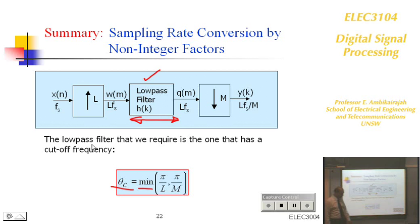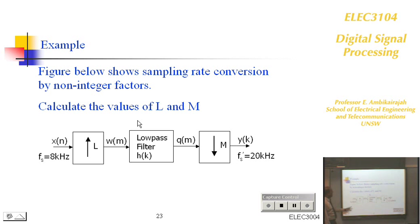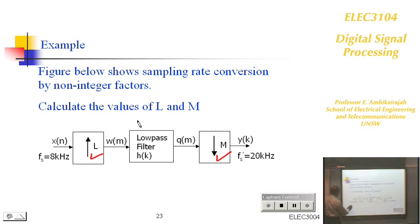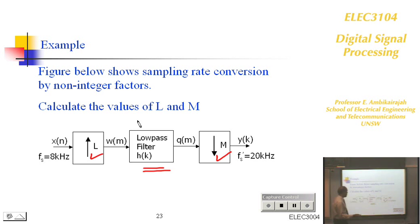Here is an example to work out: determine L and M to achieve 20 kHz from 8 kHz input. Work out 20/8 and find the prime factors, then upsample and downsample accordingly. The filter bandwidth would be 4 kHz — not 10 kHz — because the original signal is at 8 kHz sampling, so its bandwidth is 4 kHz. You can ask in the tutorial if needed.